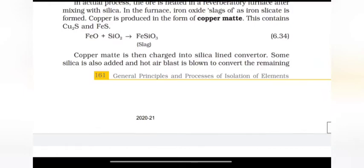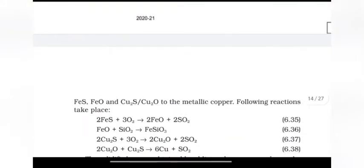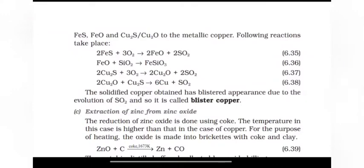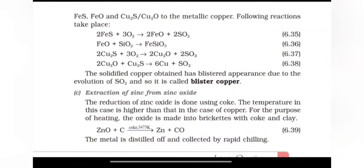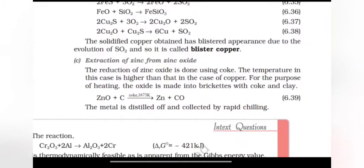The copper matte is then charged into silica lined converter. Some silica is also added and hot air blast is blown to convert the remaining FeS to FeO and copper sulfide and copper oxide to metallic copper. The following reactions take place: FeO plus SiO2 gives FeSiO3. 2Cu2S plus 3O2 gives 2Cu2O plus 2SO2. 2Cu2O plus Cu2S gives 6Cu plus SO2. The solidified copper obtained has blistered appearance due to evolution of SO2 and so it is called blister copper.